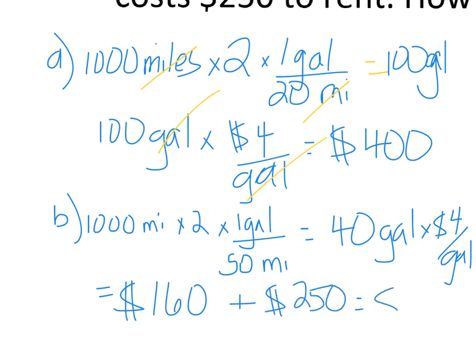Now that 40 gallons of gas times $4 a gallon is going to equal $160 in gas. But the price of the rental is $250. So all of that together is going to cost $410. So it would cost more to rent the car, even though it costs less in gas. But it might be better overall because you wouldn't have wear and tear on your car. So it might end up being probably about the same or actually cheaper to rent the car because you wouldn't put miles on your car.